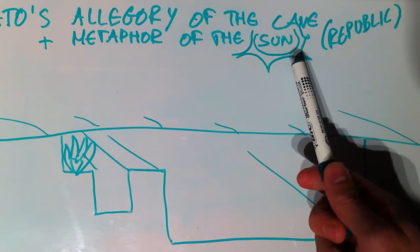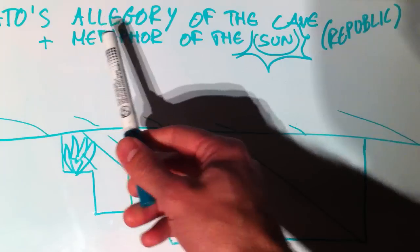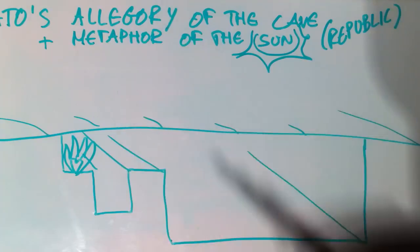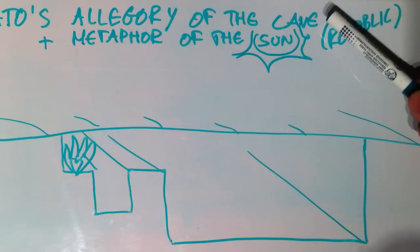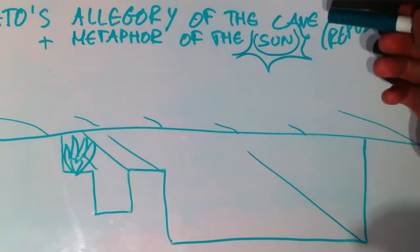Plato's metaphor of the sun is part of his book, The Republic, and there he also explains the allegory of the cave, which is quite famous. Most philosophy students know about the cave. They might not really understand what forms are all about, but at least they know the allegory of the cave.